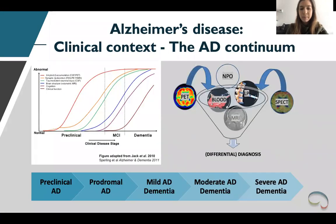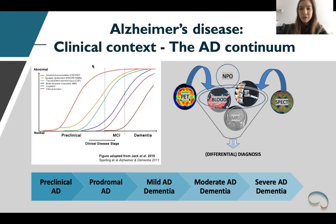I would like to start with some background information on how Alzheimer's disease is diagnosed in the clinic. During an initial visit, a number of tests are performed to establish the most accurate diagnosis. These include blood tests to check for deficiencies or abnormalities, a neuropsychological assessment to evaluate different cognitive domains, an MRI scan to visualize brain atrophy or to identify other causes of memory loss, such as a stroke or a brain tumor, and if need be, additional PET imaging or a lumbar puncture to examine amyloid beta or tau levels. The figure on the left elegantly depicts how these outcomes can be correlated to a disease stage in the Alzheimer's continuum.